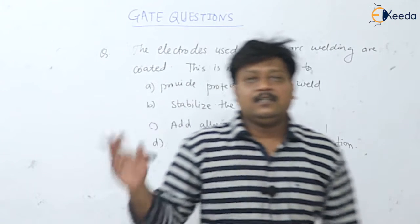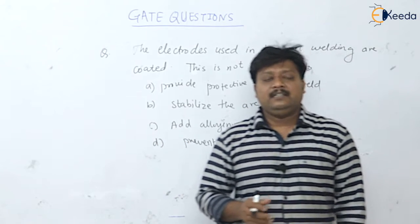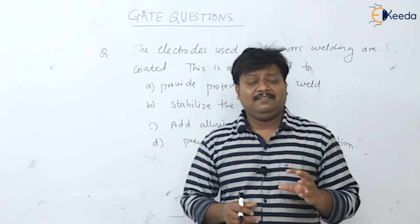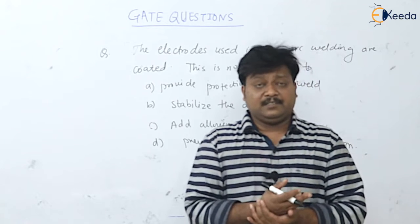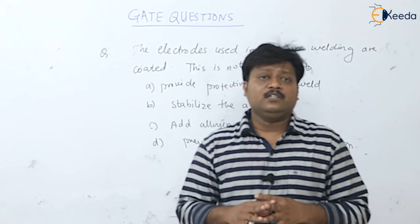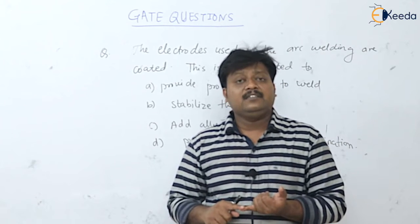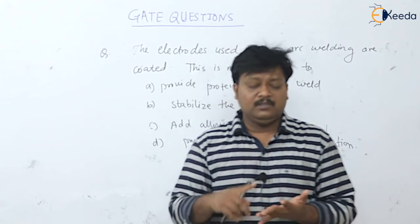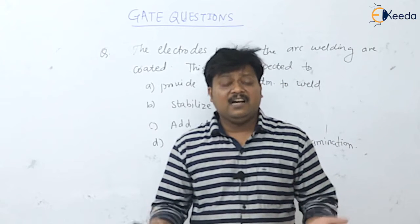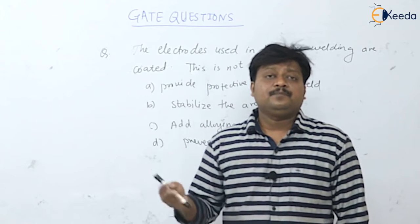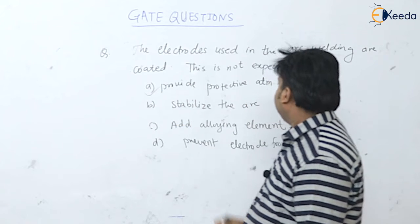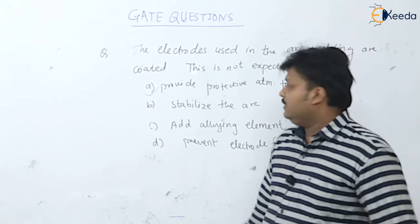There are two types of electrodes — consumable and non-consumable. In consumable electrodes, coatings are provided. What these coatings do: they deoxidize the melt, form a slag over the weld pool, absorb various gases, stabilize the arc, and add alloying elements into the weld.